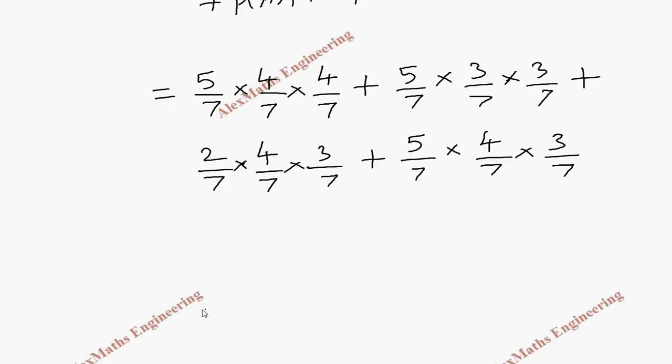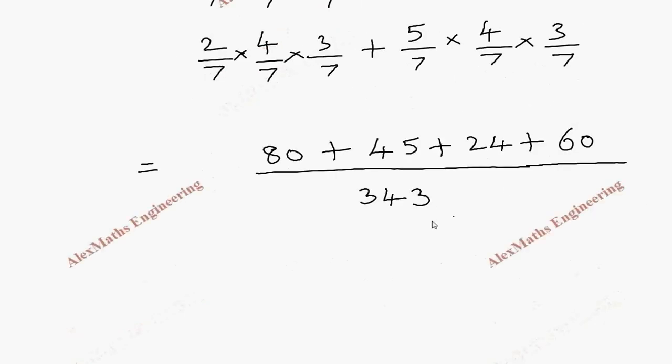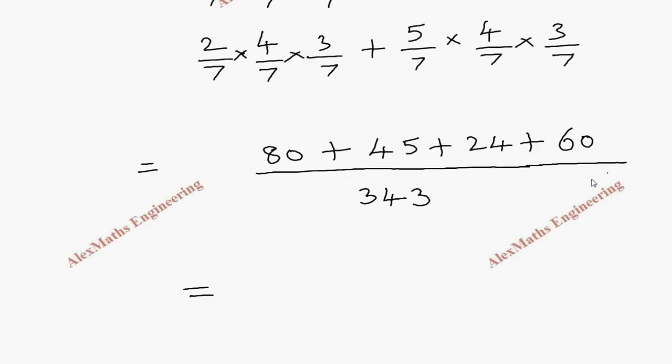So we have the common denominator 7 cubed, which is 343. The numerator: 5 times 4 times 4 is 80. Second term is 5 times 3 times 3, which is 45. Third term, 2 times 4 times 3, is 24. And the last term, 5 times 4 times 3, is 60. We are going to add all the numerators: that comes to 209 divided by 343.